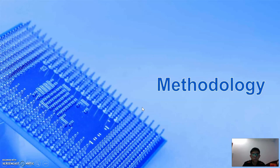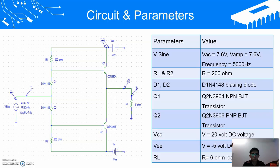Next is methodology — the circuit and parameters. For parameters, Vsign is set to 7.6 volts and frequency 500 Hz. R1 and R2 are set to 200 ohms. D1 and D2 are biasing diodes, while Q1 is an NPN BJT and Q2 is a PNP BJT. VCC is set to 20 volts and VEE is set to negative 5 volts DC. RL is set to 6 ohms as given in the question.